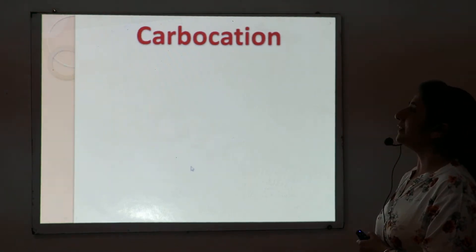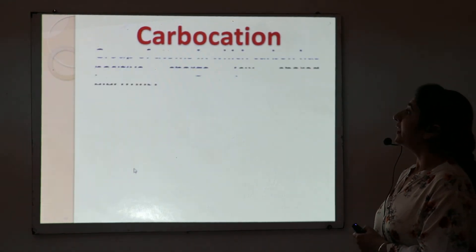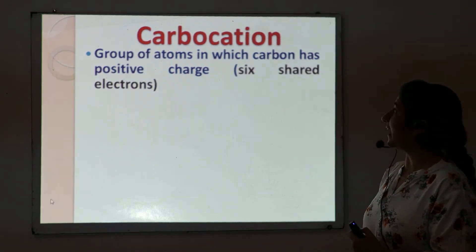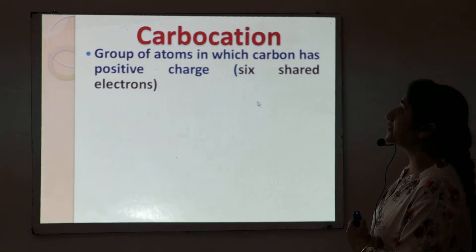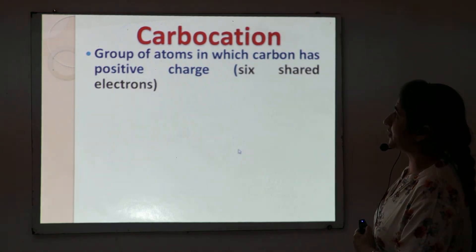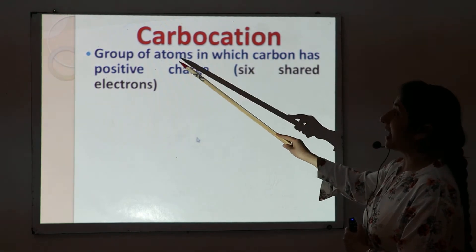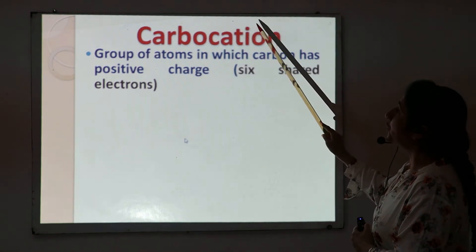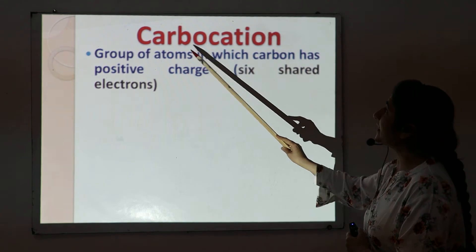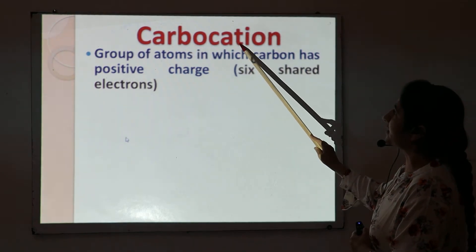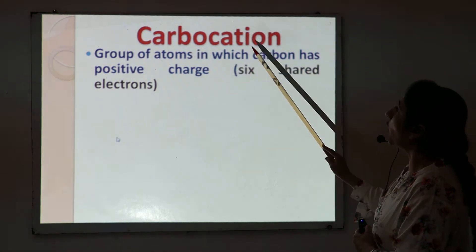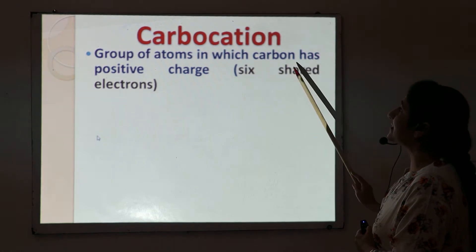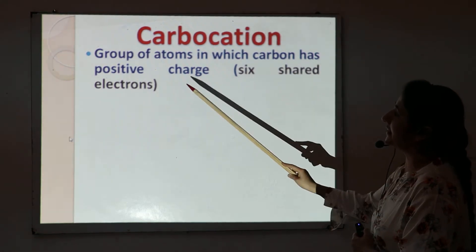So what are carbocations? A carbocation is a group of atoms in which carbon has a positive charge. Carbo means carbon and cation means positive charge. These are species in which carbon contains a positive charge, or we can say that carbon has only six shared electrons.